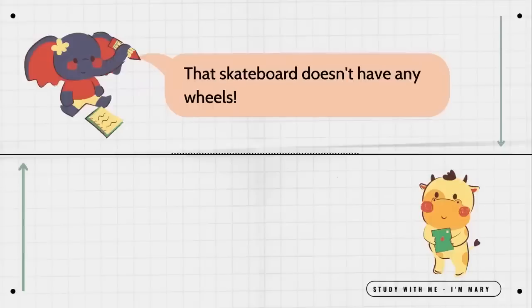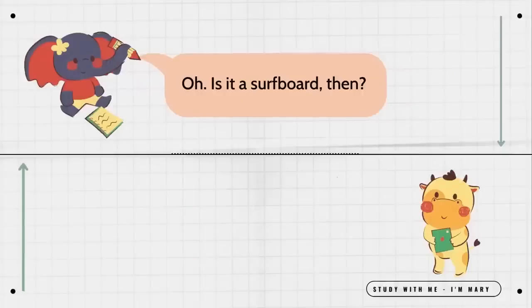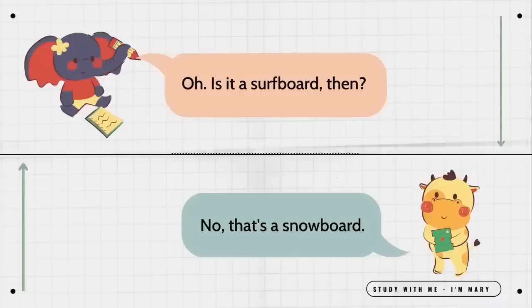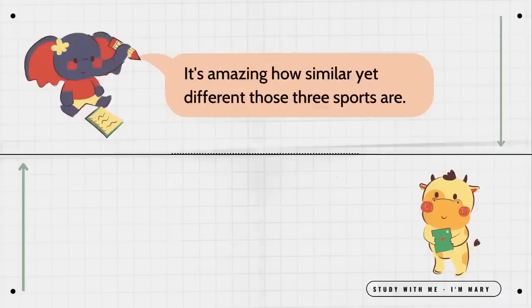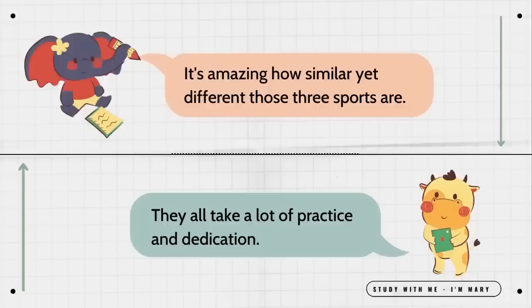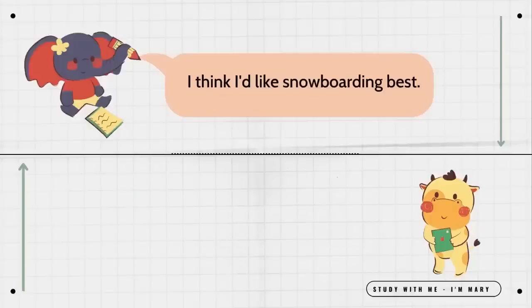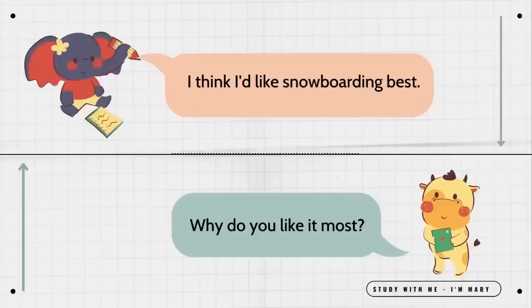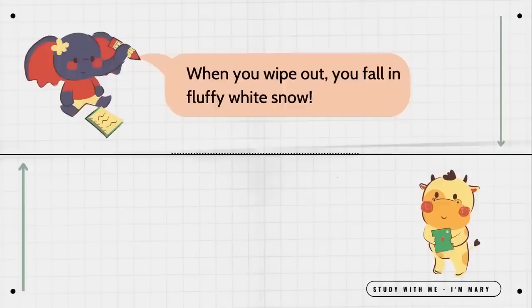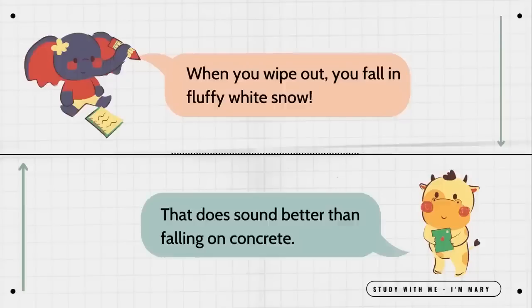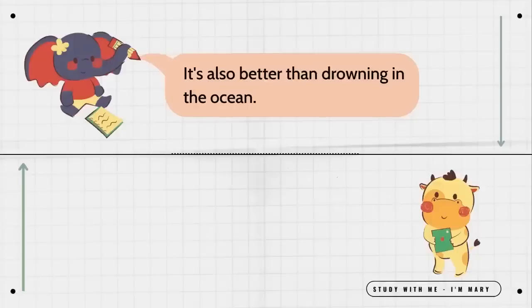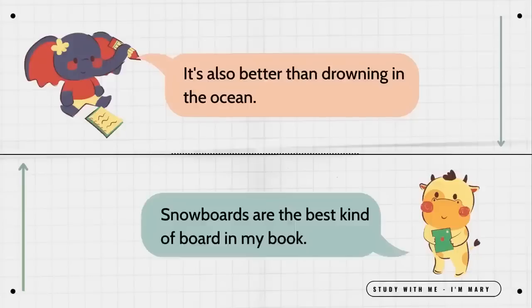That skateboard doesn't have any wheels. That's not a skateboard. Oh, is it a surfboard then? No, that's a snowboard. It's amazing how similar yet different those three sports are. They all take a lot of practice and dedication. I think I'd like snowboarding best. Why do you like it most? When you wipe out, you fall in fluffy white snow. That does sound better than falling on concrete. It's also better than drowning in the ocean. Snowboards are the best kind of board in my book.